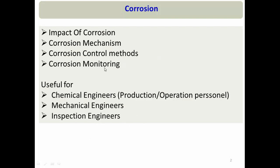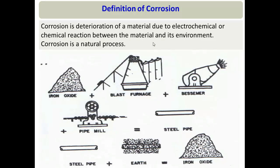With that motivation, let us define corrosion. In nature, we do not find pure iron or steel — what we find is iron oxide, such as hematite or magnetite. We convert iron oxide into steel through a very energy-intensive process. When we do this, the material's energy level goes high.